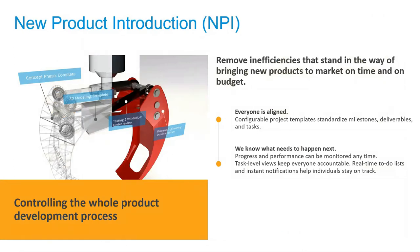The core pillars of Vault PLM include: NPI — new product introduction or new product development — which covers any process from concept through prototyping all the way to service and retirement. It's about milestones, tracking workflows, ownership of parts, seeing who did something, whether something is overdue, and real-time status. It provides project management coupled with design management, letting you view a complete portfolio of products week over week, quarter over quarter.